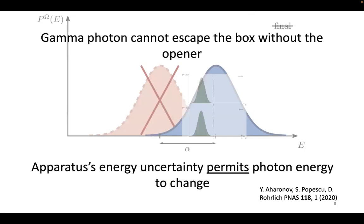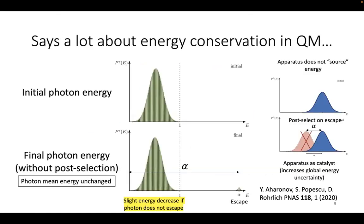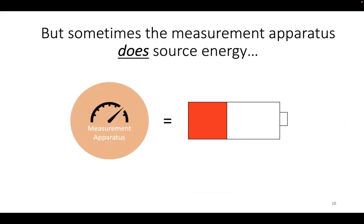The apparatus acts as a catalyst—it requires this energy uncertainty, which other speakers here have already talked about. The apparatus's energy uncertainty permits the photon's energy to change, as the possible energy shift of the photon is contained within the spread of the opener's energy distribution. This is just a statement that the gamma photon cannot escape without the opening.